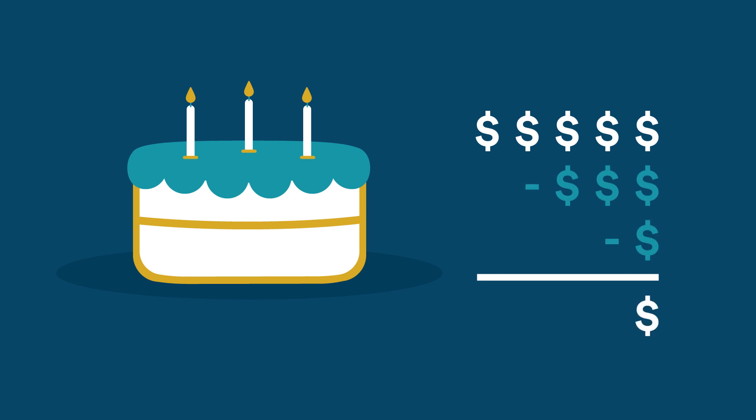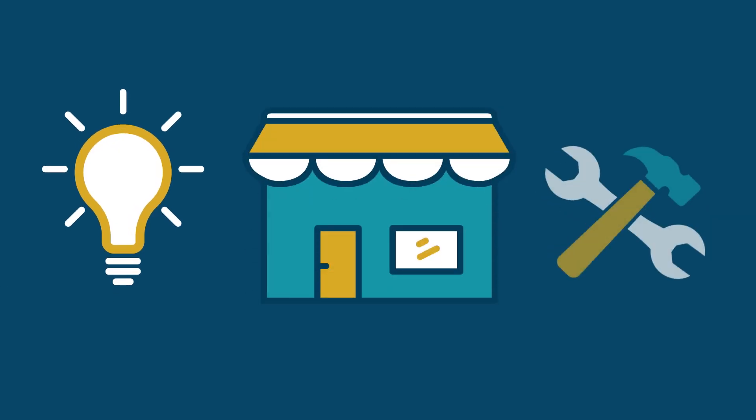Then, consider your overhead costs, especially if you sell numerous products. Accounting for fixed costs like utilities, rent, and repairs and maintenance will help you avoid turning a profit-driving product into a loss.